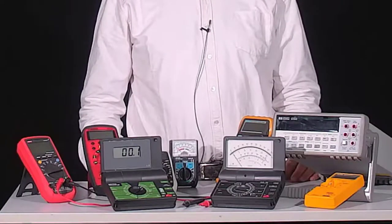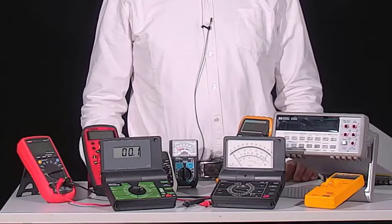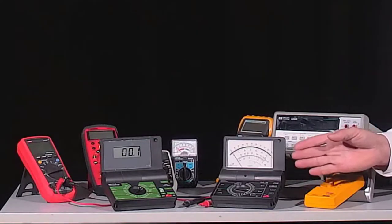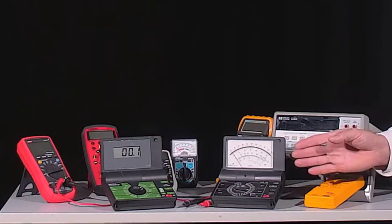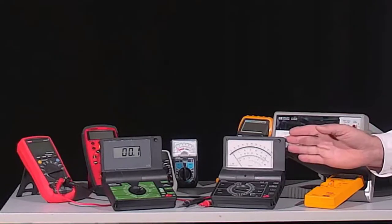In each case, different measuring ranges can be represented. A basic distinction is made between analog and digital multimeters. In analog devices, the measured variable is usually displayed by a pointer instrument using analog circuit technology.